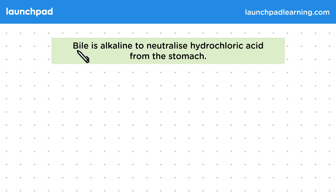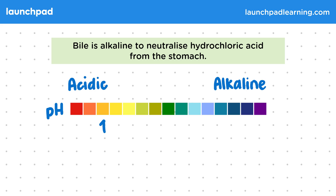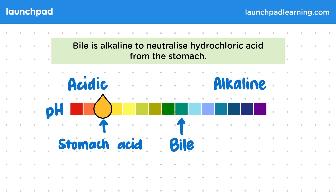The bile is released by the gallbladder at the top of the small intestine, where it mixes with the hydrochloric acid. This image shows a pH scale — the reds and oranges at this end show acidic pHs, and the blues and purples at this end show alkaline pHs. The hydrochloric acid in the stomach is acidic and sits around here on the pH scale, while bile is more alkaline and sits around here.